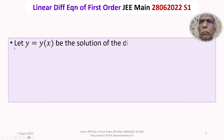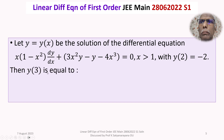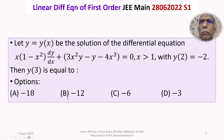The given question is: let y = y(x) be the solution of the differential equation x(1 - x²)(dy/dx) + (3x²y - y - 4x³) = 0, when x > 1, with y(2) = -2. Then y(3) is equal to — we are given four options: option A: -18, option B: -12, option C: -6, option D: -3. We are given this differential equation when x > 1 and with an initial condition y(2) = -2.